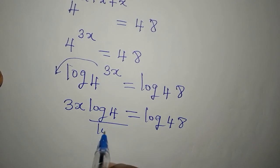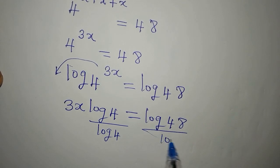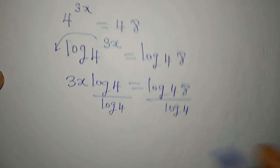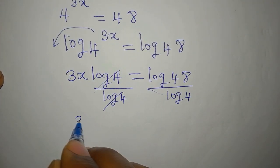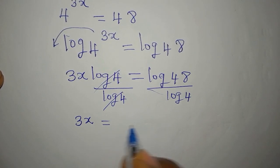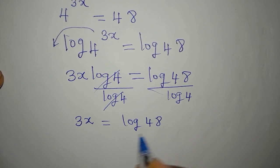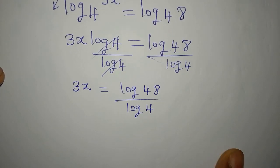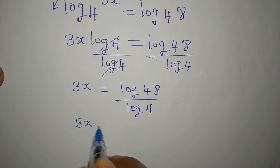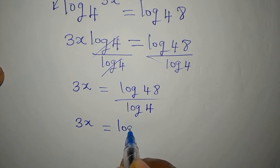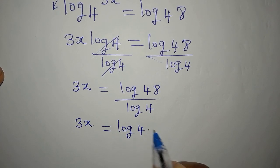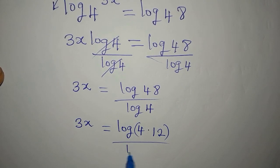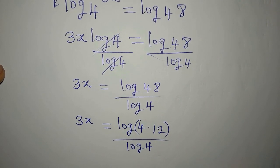We are trying to get the value of x, so we divide both sides by log 4. Now 3x is equal to log 48 divided by log 4. Keep in mind this is the same thing as 3x equals log(4 × 12) over log 4, because 4 times 12 is 48.